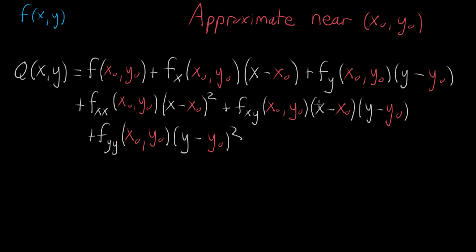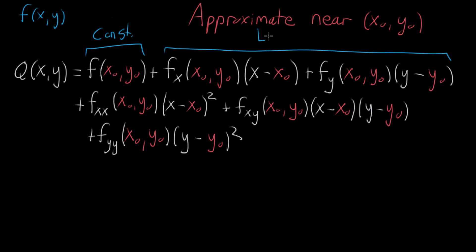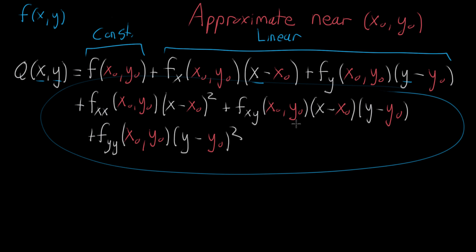Just to remind you of what all these terms are and the pattern to what's going on: this here represents what you could think of as the constant term, which just evaluates to some number. These two terms are what you might call the linear term, because the only places where the variables x and y come up, they're just being multiplied by a constant. And then all of this stuff at the end — which is the whole essence of a quadratic approximation — where you get an x squared and x multiplied by y: all of this is the quadratic term.